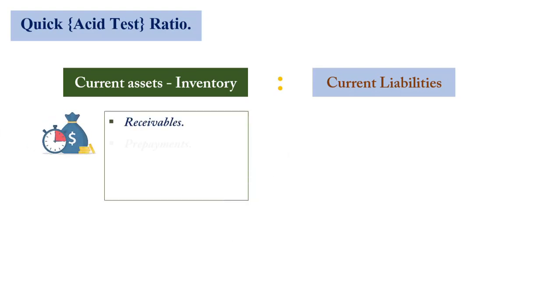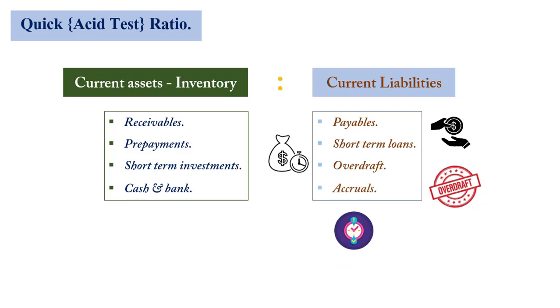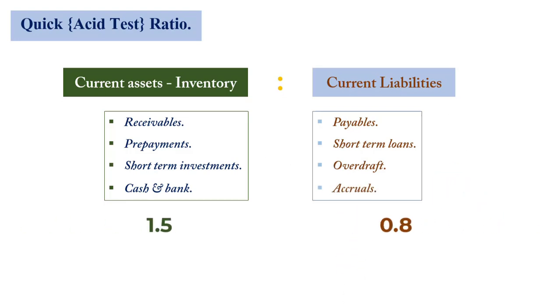So the receivables, prepayments, short-term investments, and cash against the current liabilities that we spoke about, which is payables, short-term loans, overdraft, and then accruals. If the ratio is more than one, or if you juxtapose it and you get to one is to one, then it means that the business is highly likely or has enough resources to convert into cash within the shortest possible time to settle its debt. If it is more than one, that is two is to one or 1.1 is to one, 1.5 is to one, that is a healthy position for a business to be in.